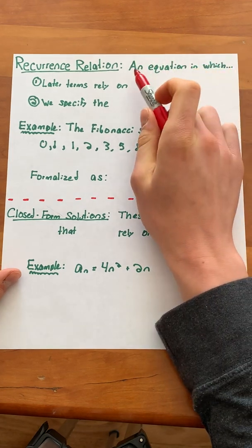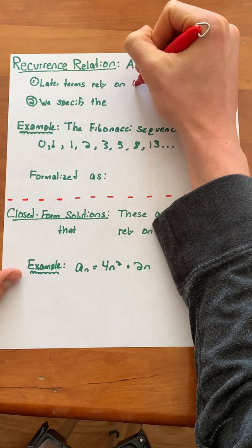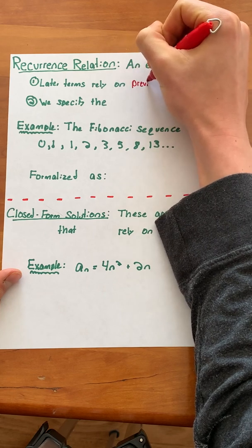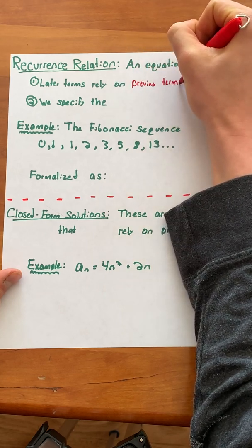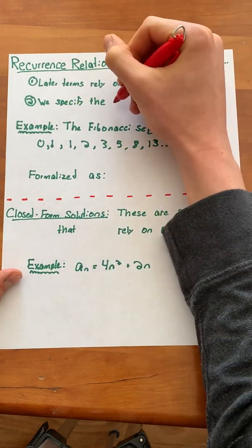A recurrence relation is an equation in which later terms rely on previous terms. This means that it's important that we specify the first few terms.